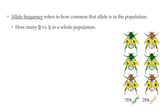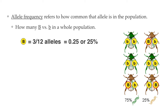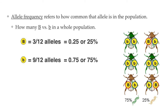In other words, how many big B and how many little B alleles there are. So in this population, there are six beetles, each of them with two copies of the gene. That means that there are a total of 12 alleles for color in this population. Three of the beetles are brown, but as you can see, each of them is heterozygous for that trait. So only three of the 12 alleles are the big B alleles, which means that 25% of the alleles in this population are the big B alleles. Then, nine of the 12, or 75%, of the alleles in this population are the little b alleles.